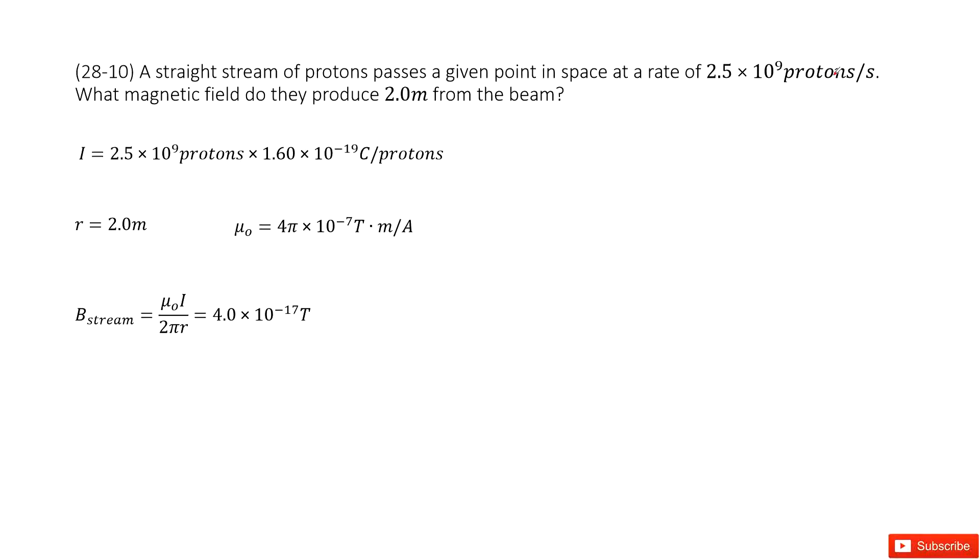So we can see we just talked about magnetic fields due to a straight wire. For a straight wire, that means a current goes through it. And similarly, if a stream of protons goes through in space, we can still consider it as a wire.